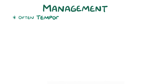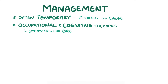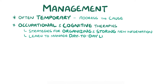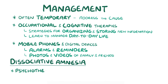In many cases, amnesia is temporary, and people will regain memory so long as the cause is addressed. Occupational and cognitive therapies can assist with the recovery process by teaching people strategies for organising and storing new information, and help those with amnesia learn to manage day-to-day life. Mobile phones and other portable digital devices have become a really important part of treatment, as they can provide people with alarms and other reminders, as well as a way of storing important information like pictures and videos of close friends and family. For dissociative amnesia, psychotherapy can help a person safely process traumatic memories.